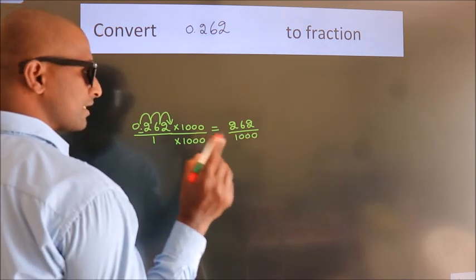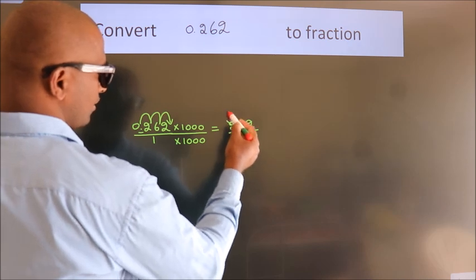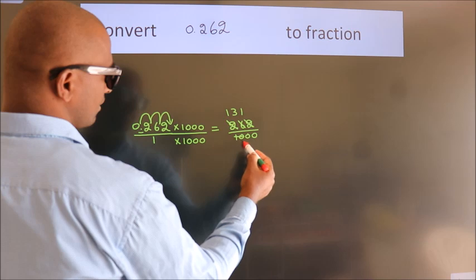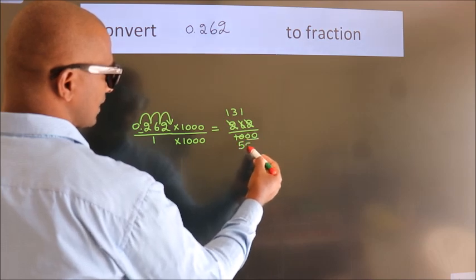Now, I cancel with 2. 2 into 262 is 131, 2 into 1000 is 500.